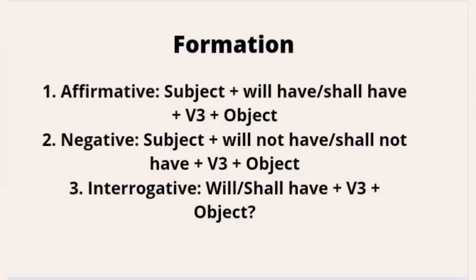For the formation of future perfect: if your sentence is affirmative, it begins with subject, will have or shall have, third form of the verb, object. If negative: subject, will not have or shall not have, third form of the verb, and object. If interrogative: will have or shall have, subject, third form of the verb, and object.